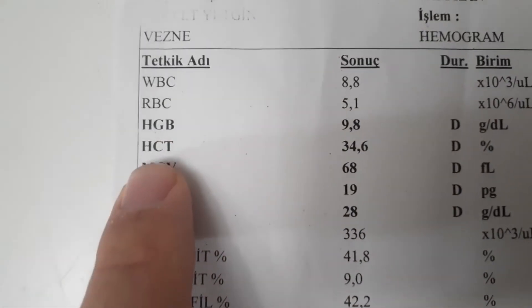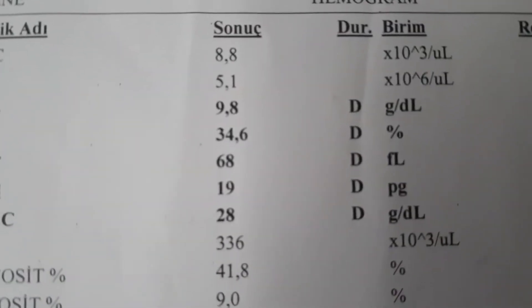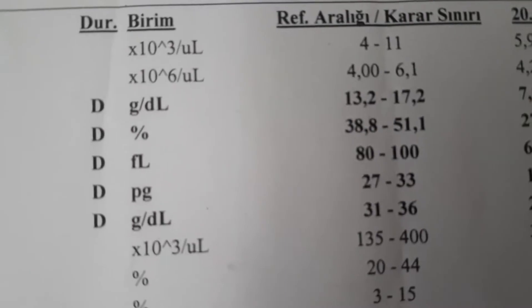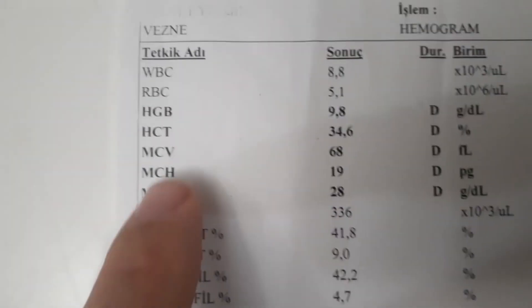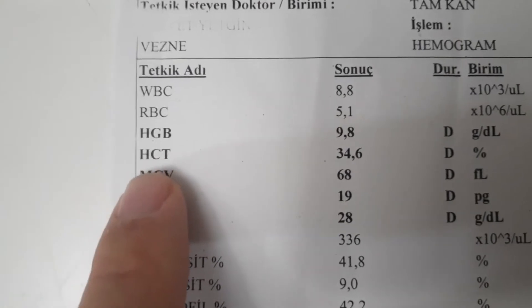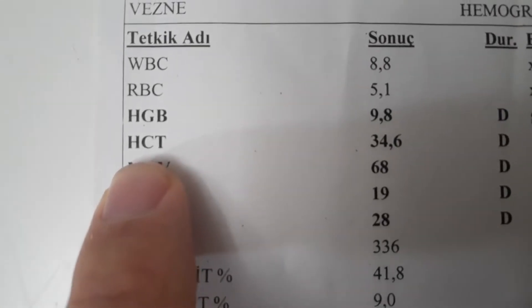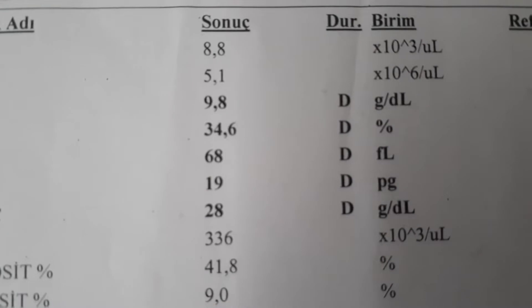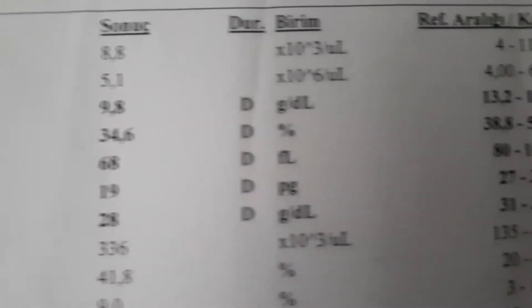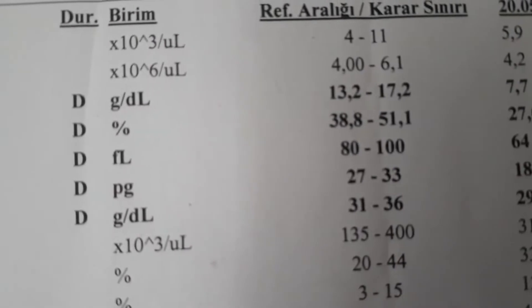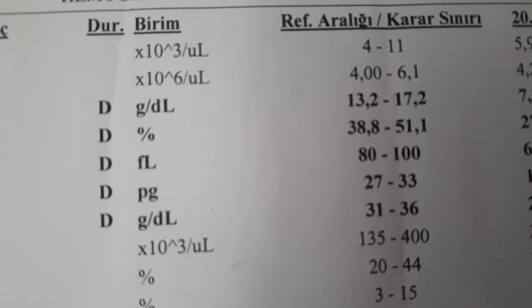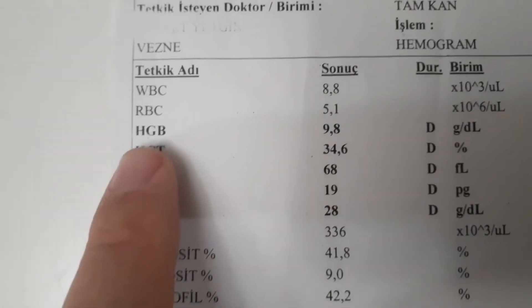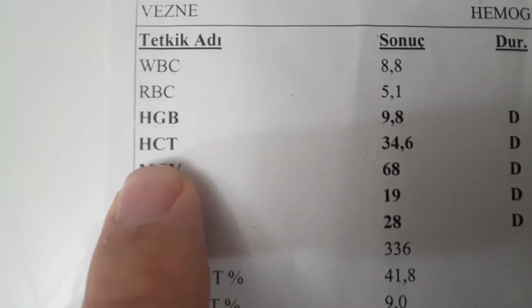HCT stands for hematocrit — it is the ratio of red blood cells in the blood to the whole blood. It generally goes up and down for the same reasons as RBC. It decreases in bone marrow diseases, chronic inflammatory diseases, iron deficiency, folate deficiency, B12 deficiency, hemorrhages, hemolytic anemia, kidney failure, and leukemia. Elevated hematocrit is rare and may result from congestive heart failure, congenital heart disease, dehydration, kidney tumors, lung diseases, or polycythemia vera.